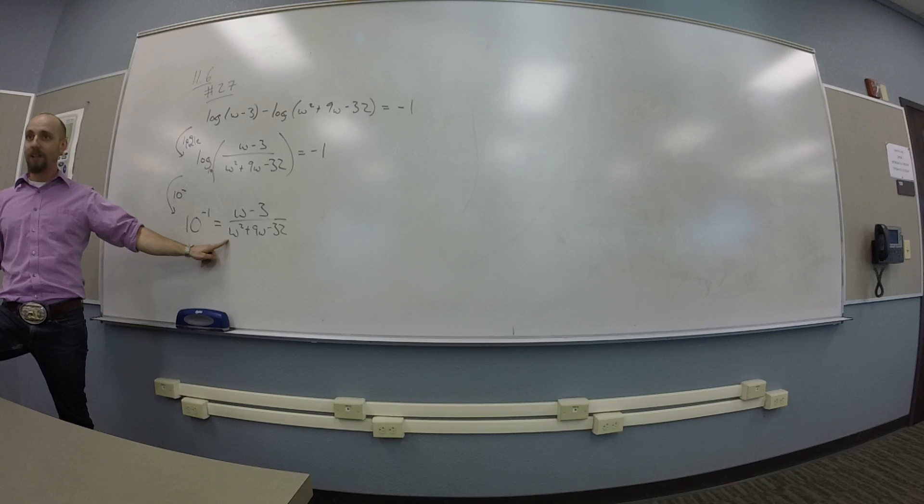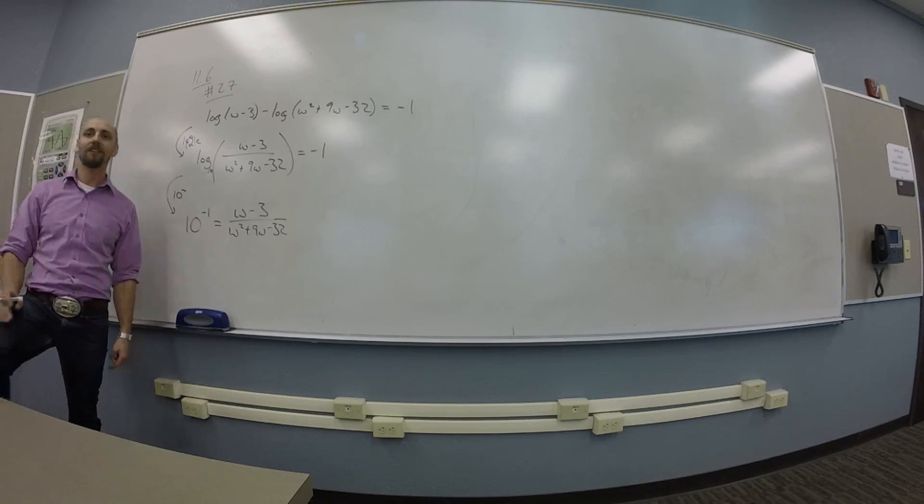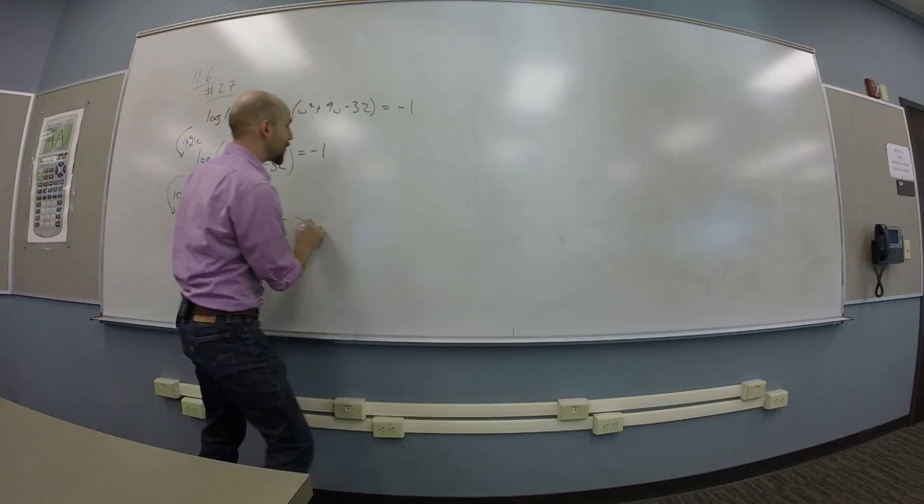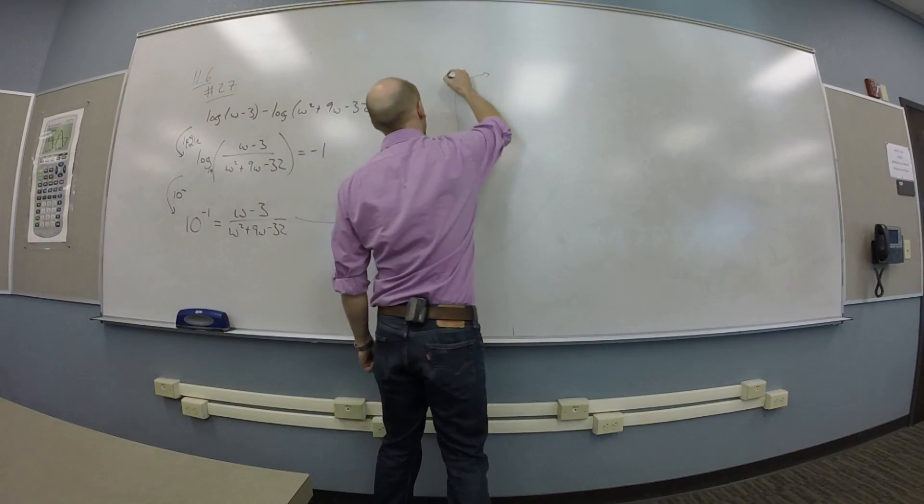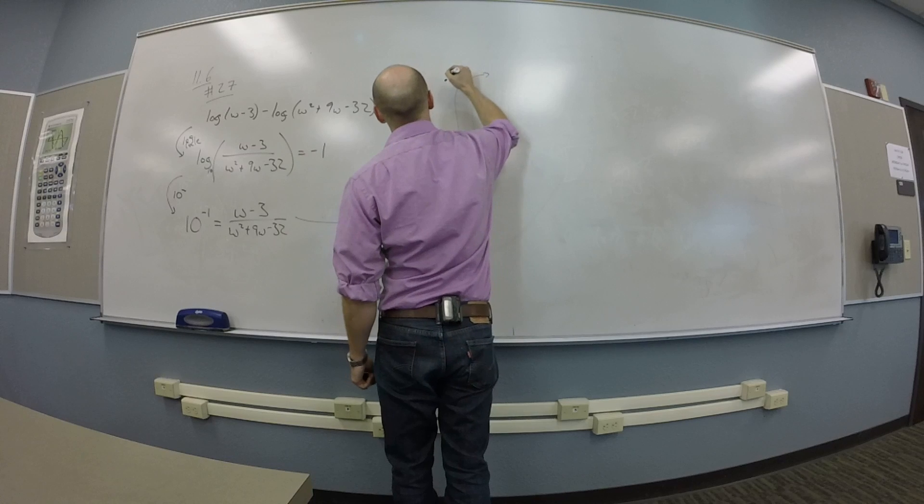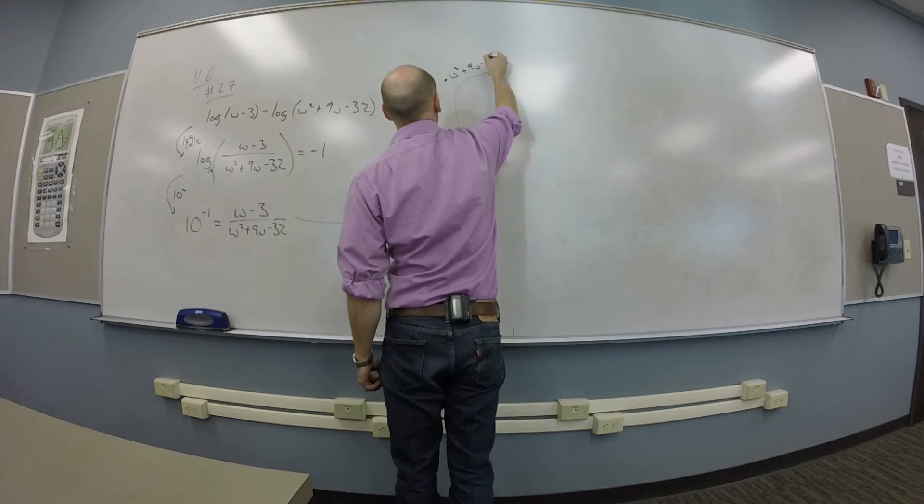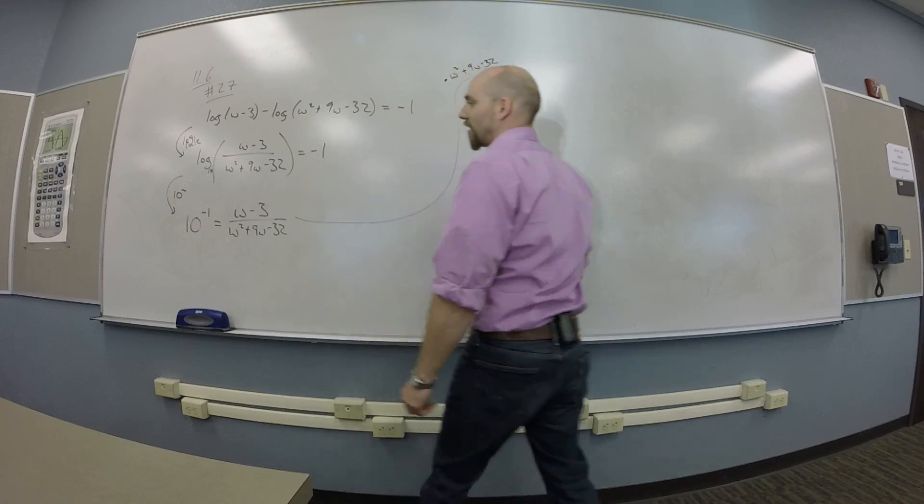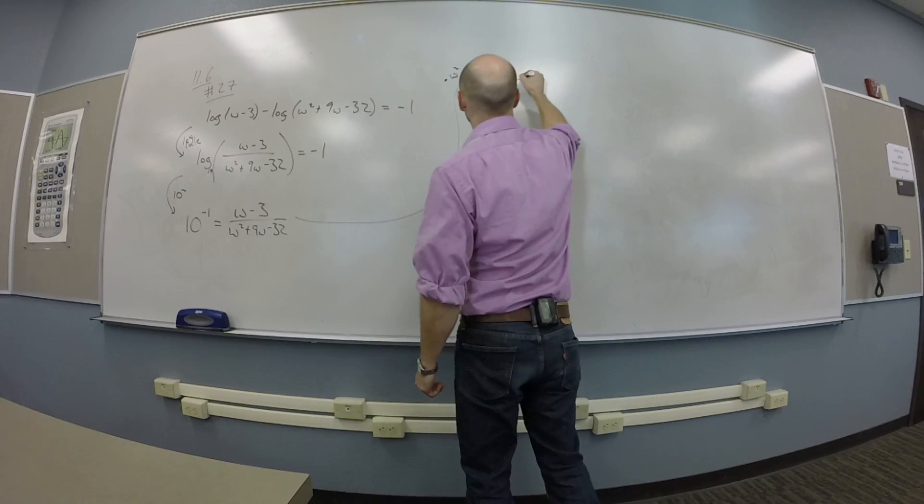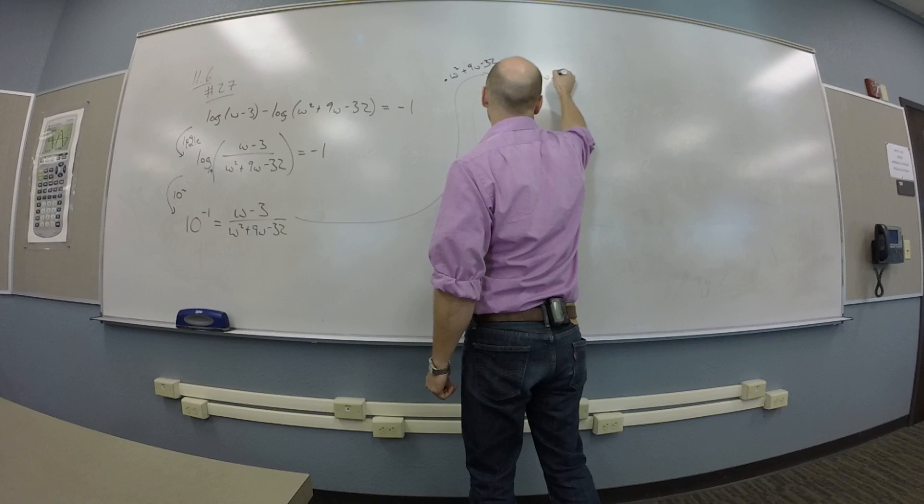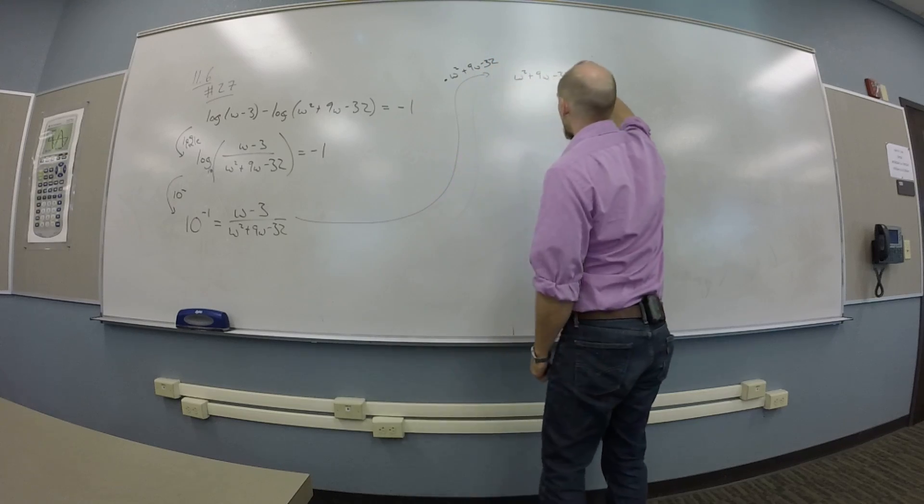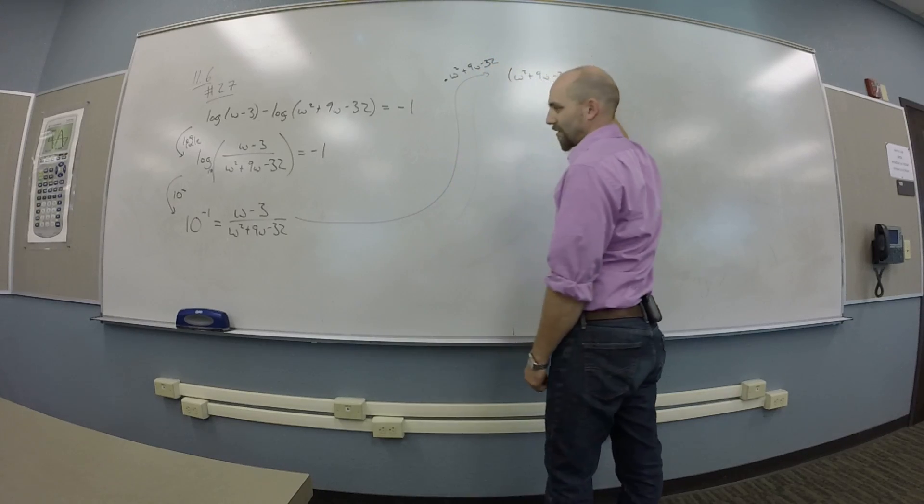Multiply both sides by W squared plus 9W minus 32. But we might remember, right, that this is some kind of a fraction gadget. Right? So I might remember back to chapter 9 where I would say multiply by the bottom. So I might multiply by W squared plus 9W minus 32. And I'll get W squared plus 9W minus 32 times. Times the negative 1.